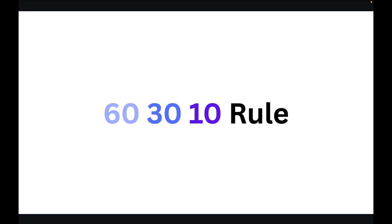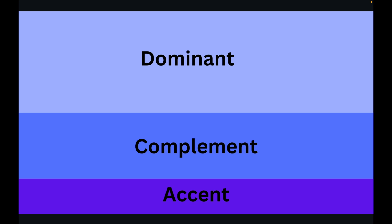In the 60-30-10 rule, we will pick dominant, complement, and accent colors. 60% is the dominant color — this is what you will use in the background. Whatever color is dominant on your screen, you will use it at 60%, not 100% or 80%.